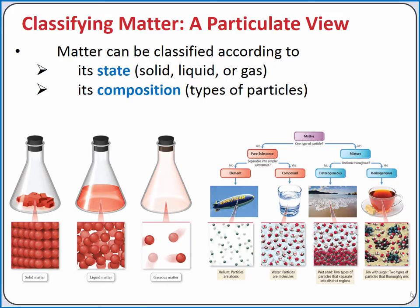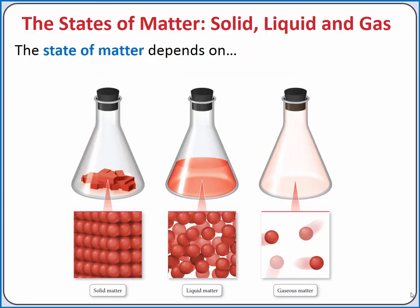When we classify matter, we can talk about its state — which is solid, liquid, or gas — and we can also talk about its composition, or the type of particles that compose it. The state of matter depends on the relative positions of the particles that compose it. For solids, the particles are close together in fixed positions with respect to one another, and they simply vibrate while maintaining those fixed positions. For liquids, the particles can move with respect to one another but stay relatively close. For gases, the particles are far away from each other, so there's a great deal of empty space between particles. The state of matter also depends on the forces between the particles relative to temperature.